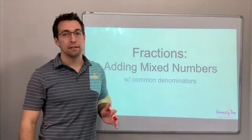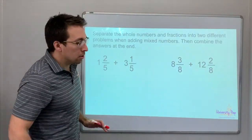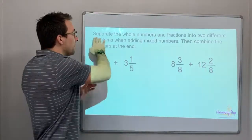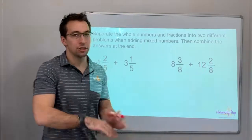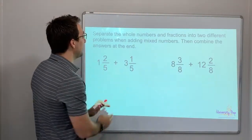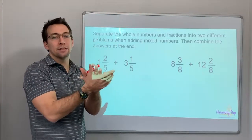This is step one to adding mixed numbers, because our denominators are going to be common. In order to add mixed numbers, you have to separate the whole numbers and the fractions into two different problems. So we can add 1 plus 3 and 2/5 plus 1/5, then we'll combine the answers.